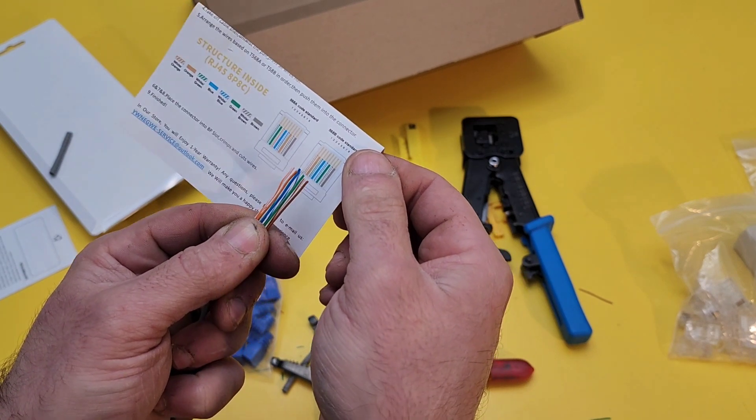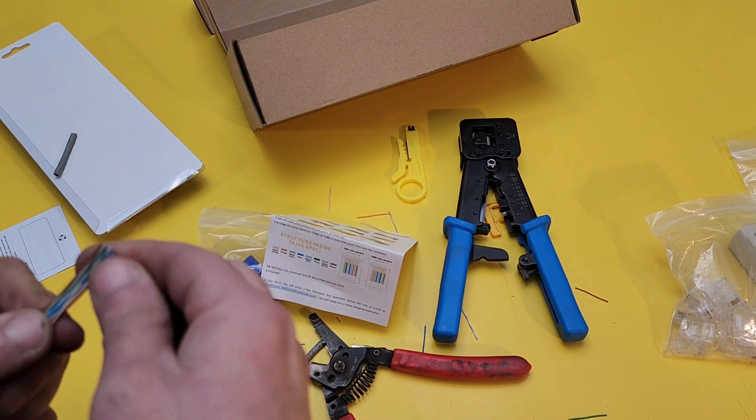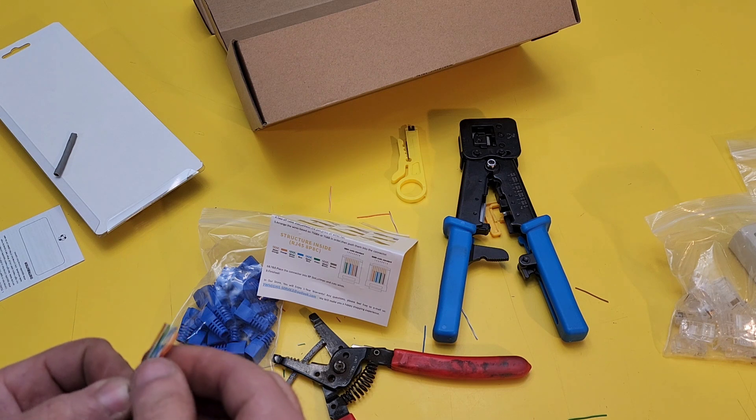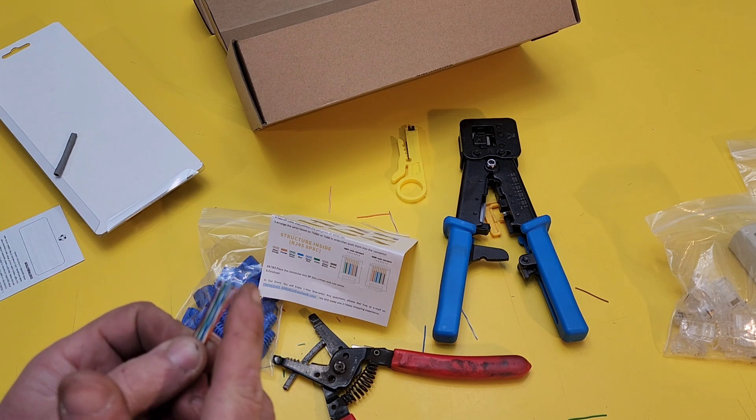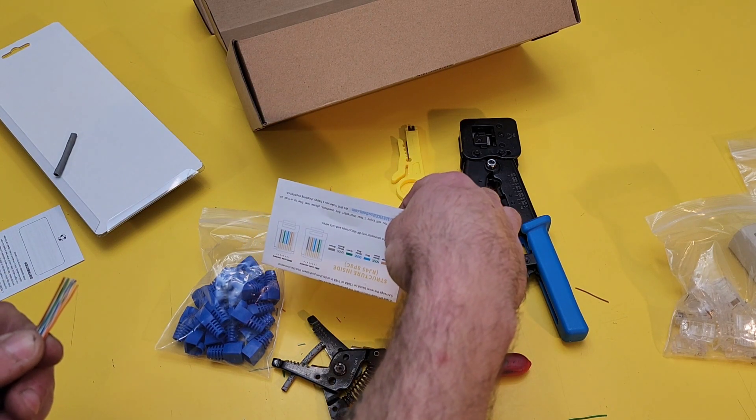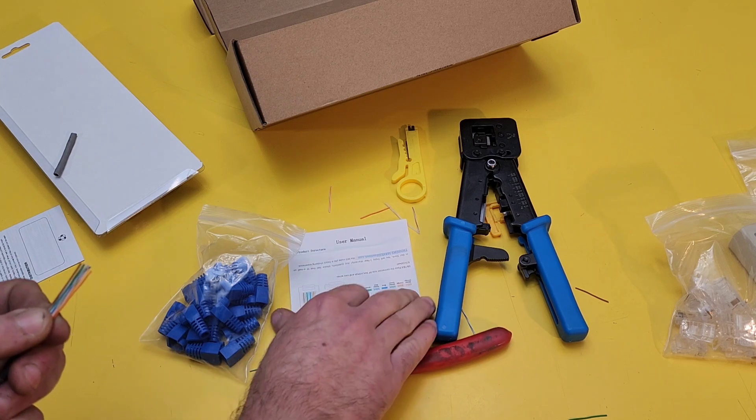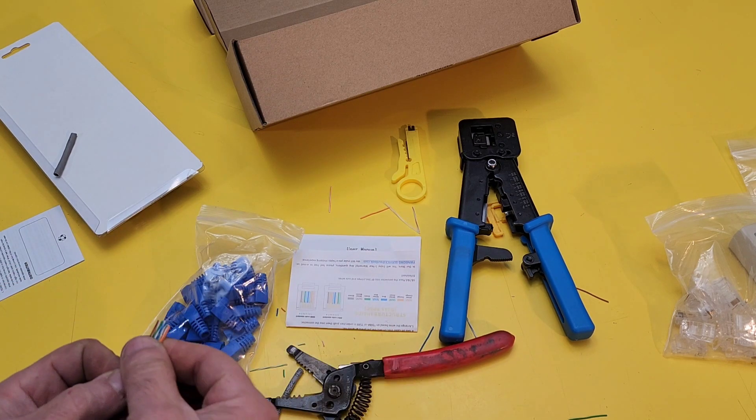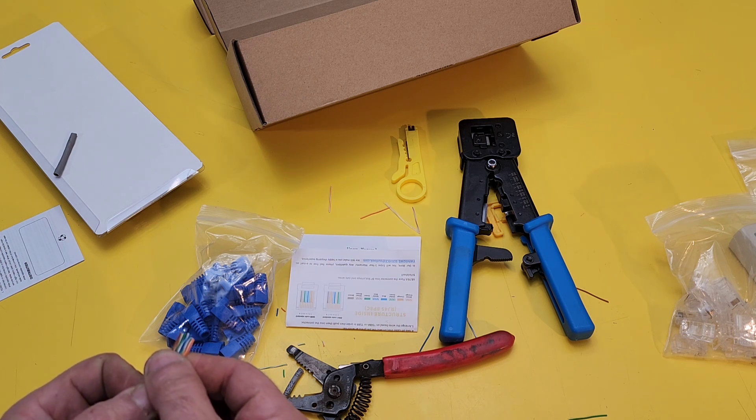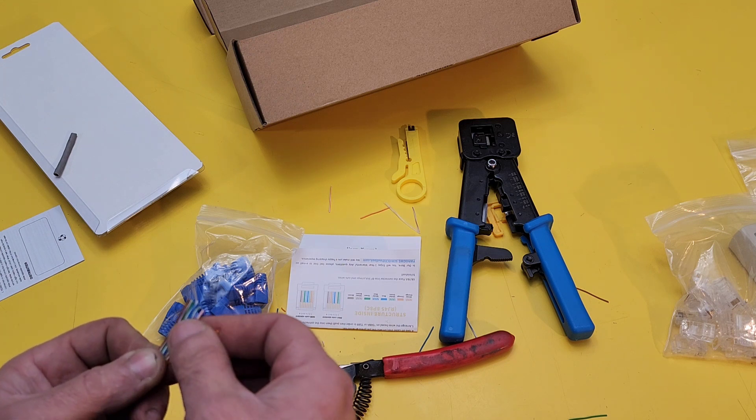But what I do is I'll usually do this backwards. So I will have one on this side. So I'll kind of look at it like this. Kind of upside down. Brown-brown. Green. Blue-blue. Green. Orange-orange.